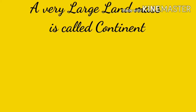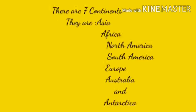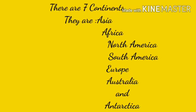Look carefully at the world map. A very large landmass is called a continent. There are seven continents: Asia, Africa, North America, South America, Europe, Australia, and Antarctica.